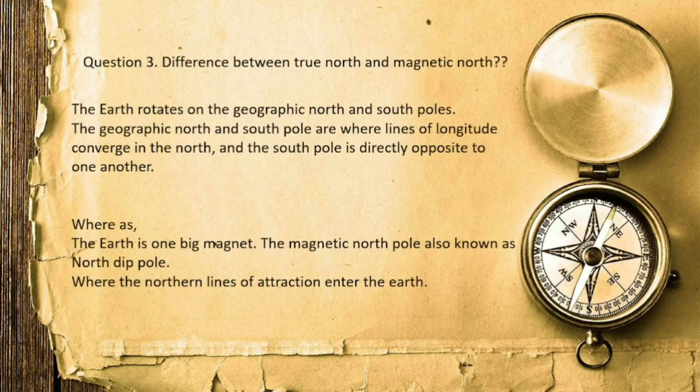The difference between true north and magnetic north: there are imaginary lines of latitude and longitude. The longitude lines intersect at the north pole and south pole. That intersection point at the top — the north pole — is the true north. The axis from north pole to south pole is the axis of the Earth's rotation, and that defines true north.